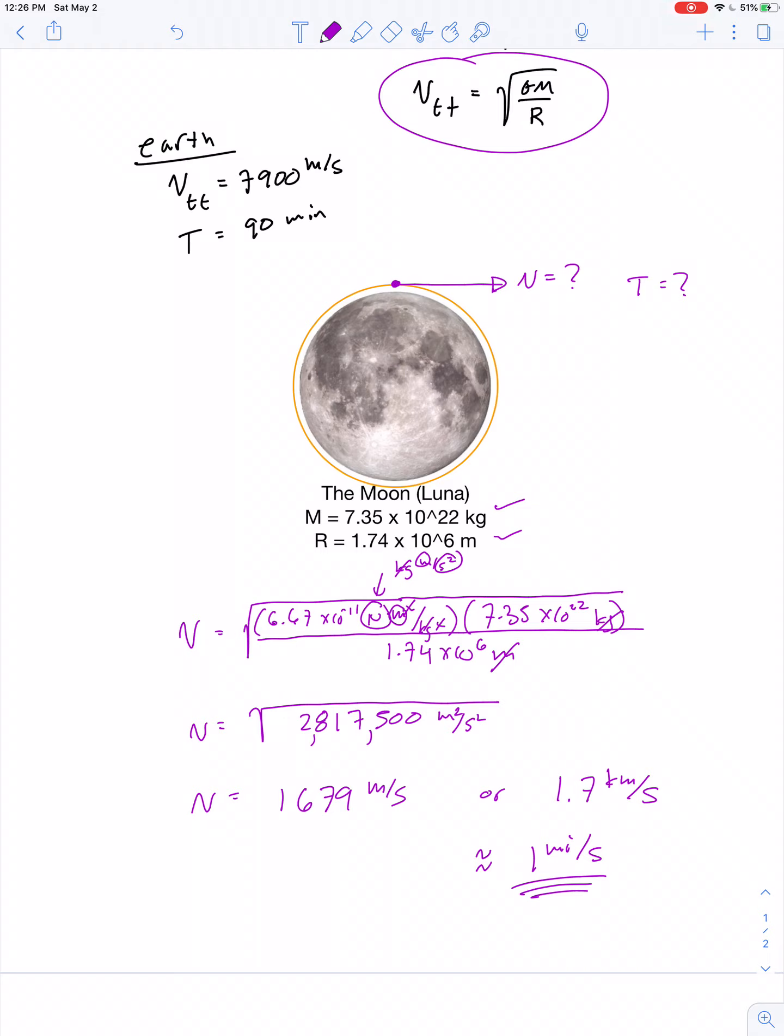It's very fast, but not as fast as the 7.9 kilometers per second required for a treetop orbit of the Earth which would never be possible because of the Earth's atmosphere.